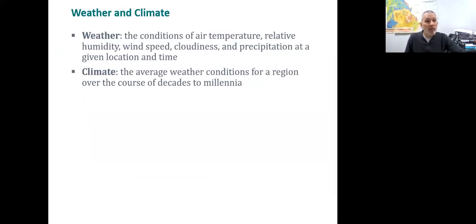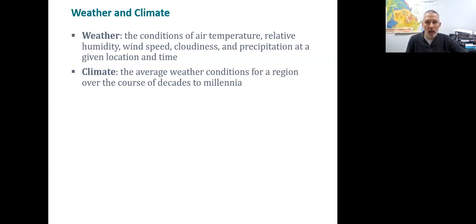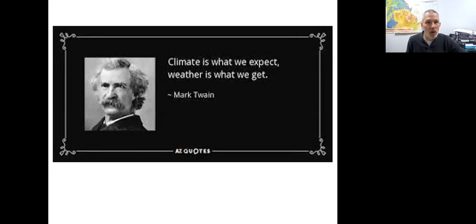We can see that weather is transient, so I need to make a distinction between weather and climate. Weather is the conditions — air temperature, relative humidity, wind speed, cloudiness, dew point, and precipitation — at a given time and a given location. Climate is all of those measurements over a longer period of time, usually decades to millennia. As Mark Twain said, climate is what you expect; weather is what you get.